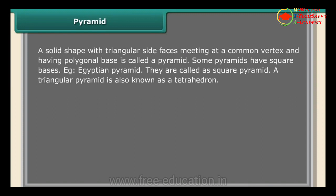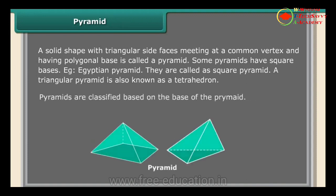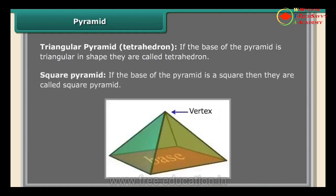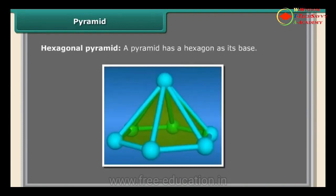A pyramid is a solid shape with triangular side faces meeting at a common vertex and having a polygonal base. Some pyramids have square bases — for example, the Egyptian pyramid, called a square pyramid. A triangular pyramid is also known as a tetrahedron. Pyramids are classified based on their base: a triangular pyramid is called a tetrahedron, a square pyramid has a square base, and a hexagonal pyramid has a hexagon as its base.